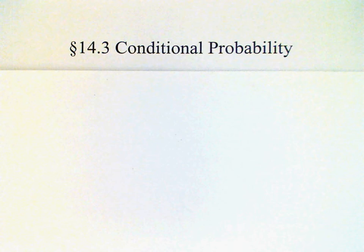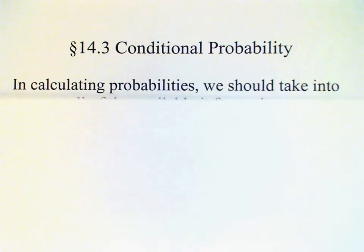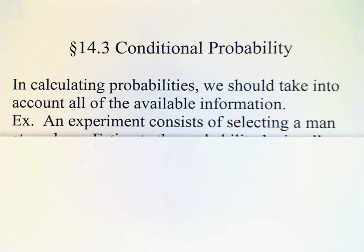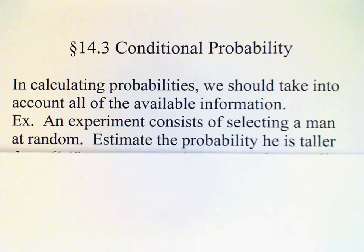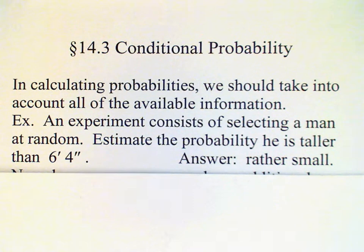Sometimes special conditions placed on an experiment can make dramatic differences in the probabilities we calculate. For example, we have an experiment which consists of selecting a man at random and estimating the probability that he is taller than 6 feet 4 inches.